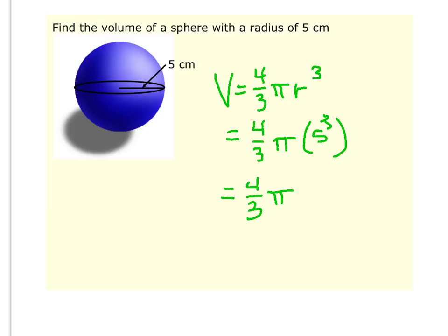5 to the third power is 125, 5 times 5 times 5. If you think of this as 125 over 1 and you multiply straight across, 4 times 125 is 500. But 500 is not divisible by 3, so we're just going to leave it as 500 over 3 pi. This time we're doing volume, so it would be cubic centimeters.